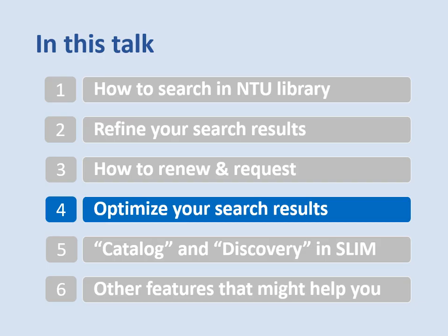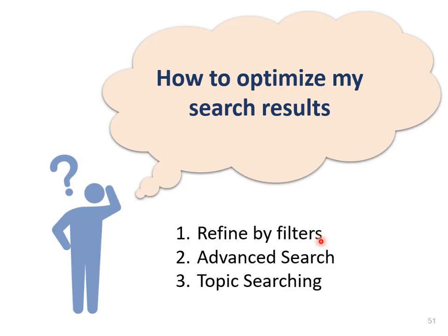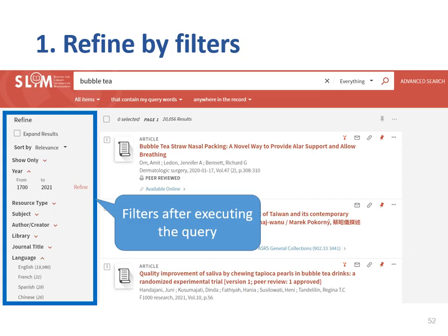Let's move on to the next part. The next topic I would like to focus on is how to optimize your search results. There are three ways to optimize your search results. The first one is refining by filters. The second one is using advanced search. The third one is topic searching — my colleague will introduce it later. As we mentioned earlier, you can use the filters on the left-hand side to refine the search results, such as by year, resource type, or language.